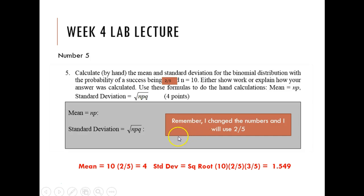First I'm going to show you how to do this by hand or with a calculator. The mean is simply n times p. If n is equal to 10 and p is equal to two-fifths, the mean is equal to 10 times two-fifths, which is 10 times two-fifths is 20 divided by 5, which is 4.